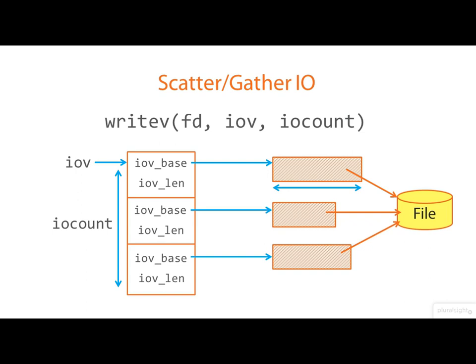The data is written atomically to the file. By atomic I mean that the three buffers are guaranteed to end up contiguous and sequential in the file, even if some other process concurrently is appending data to the file. There's also readv, which reads from the file, scattering the data into multiple buffers — again specified by an array of iovec structures.